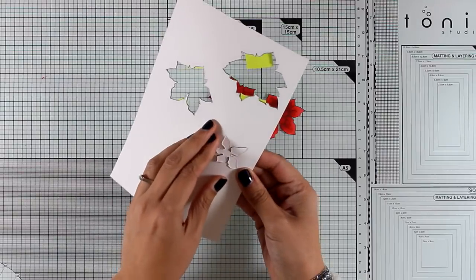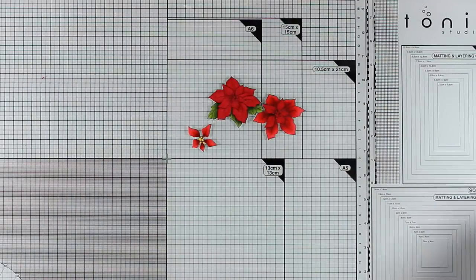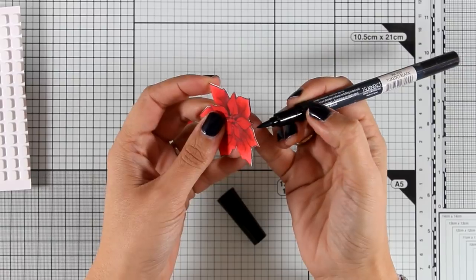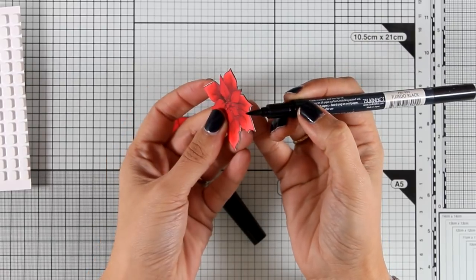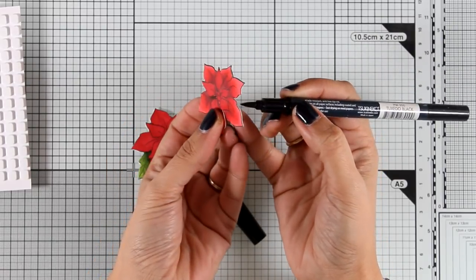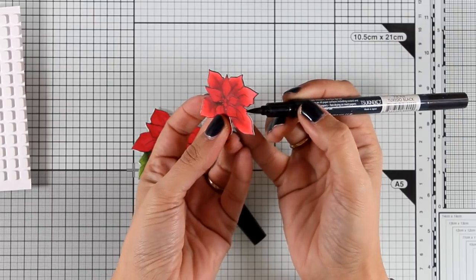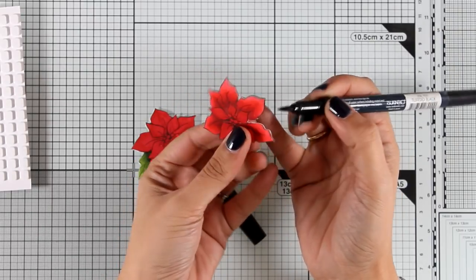On the edges you are able to see the white core of my paper and that's why I'm going all around the flowers with my black marker just to make sure they don't have any white edges.